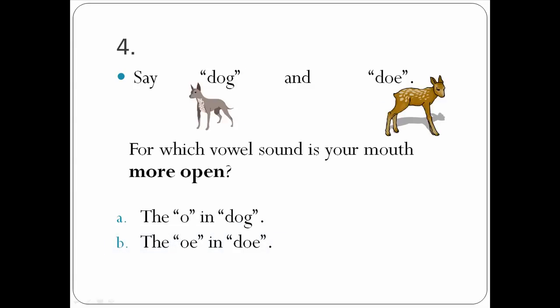4. Say dog and doe. For which vowel sound is your mouth more open? Your mouth is more open for the O in dog. Again: dog, doe.